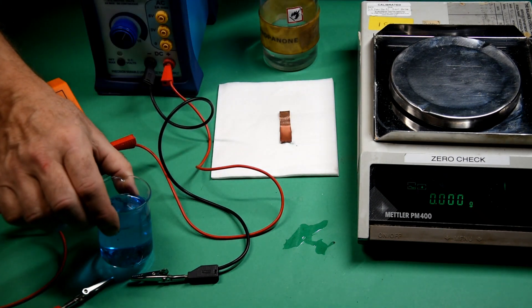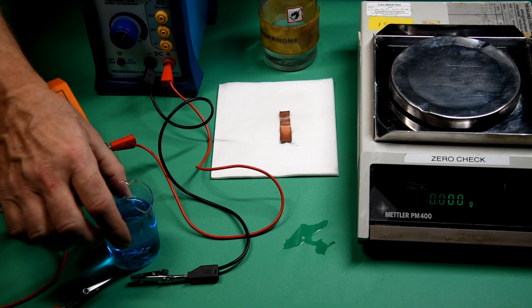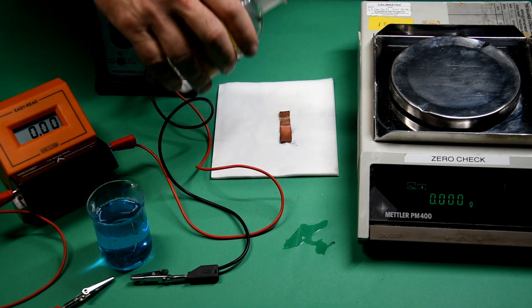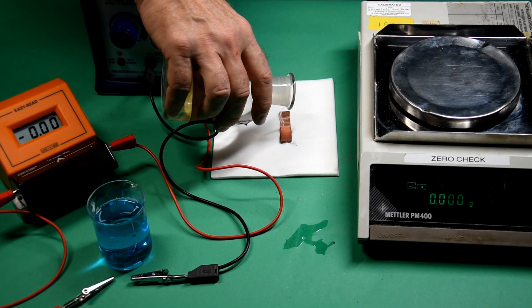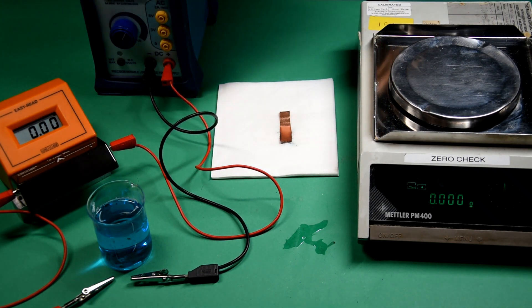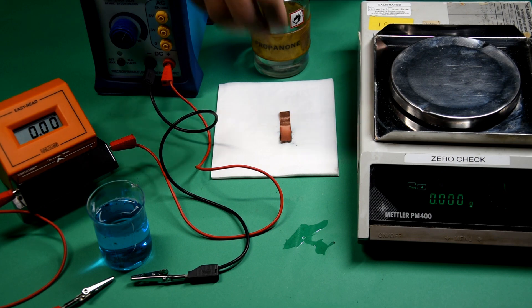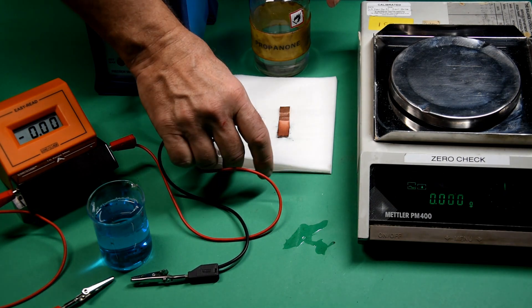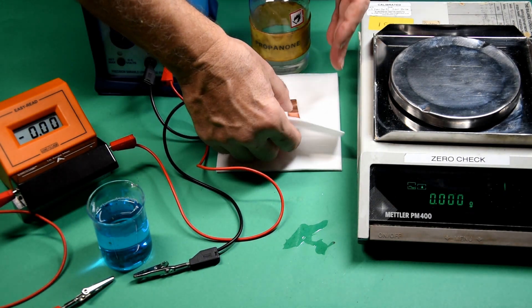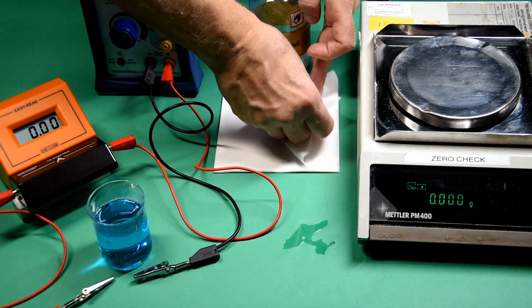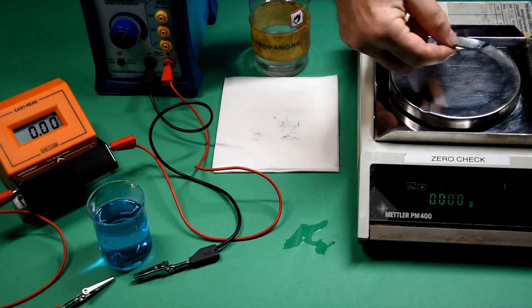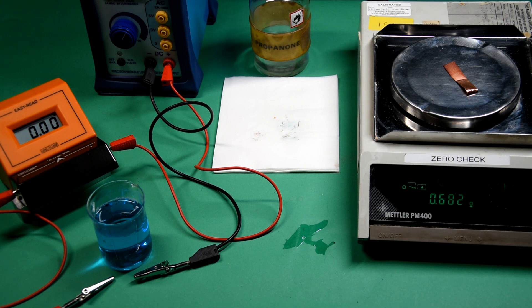The process is repeated for the cathode. Once again, waiting for it to dry before putting it on the top pan balance. The cathode has gained approximately 0.13 of a gram.